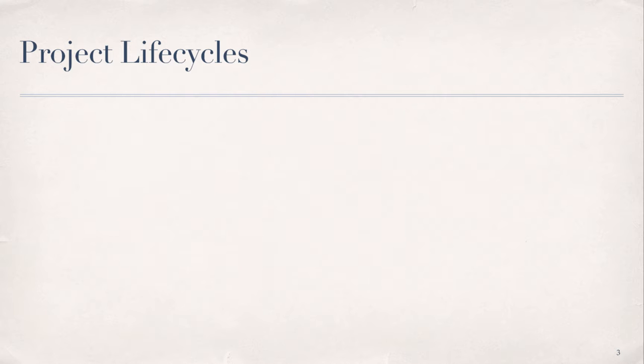We begin with a quick review of project life cycles. A project life cycle represents the series of phases that a project goes through from the start of the project to its completion. This framework applies to all projects, regardless of scope or life cycle type. Project life cycles can be predictive or adaptive. Predictive life cycles are often referred to as waterfall life cycles, as the project's scope, time, and cost are identified and fixed at the project outset. Work then moves linearly from one project phase to the next.